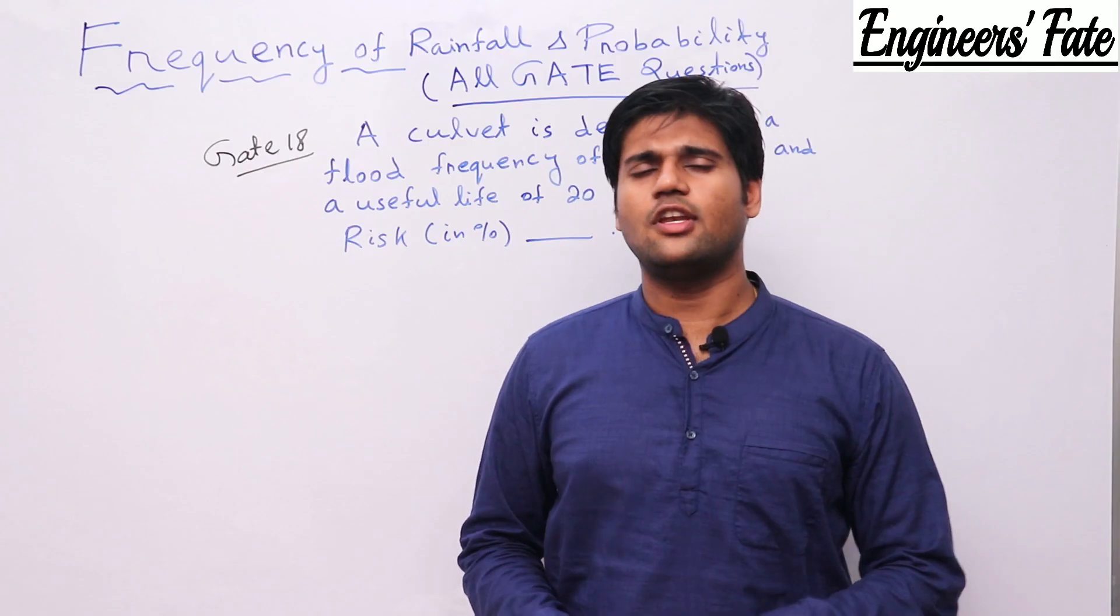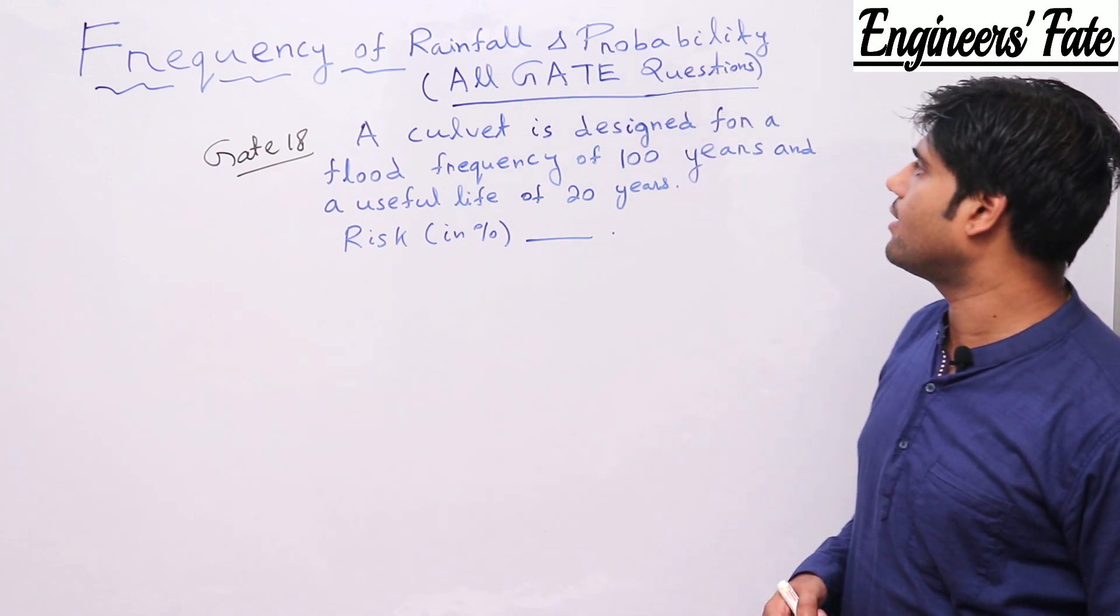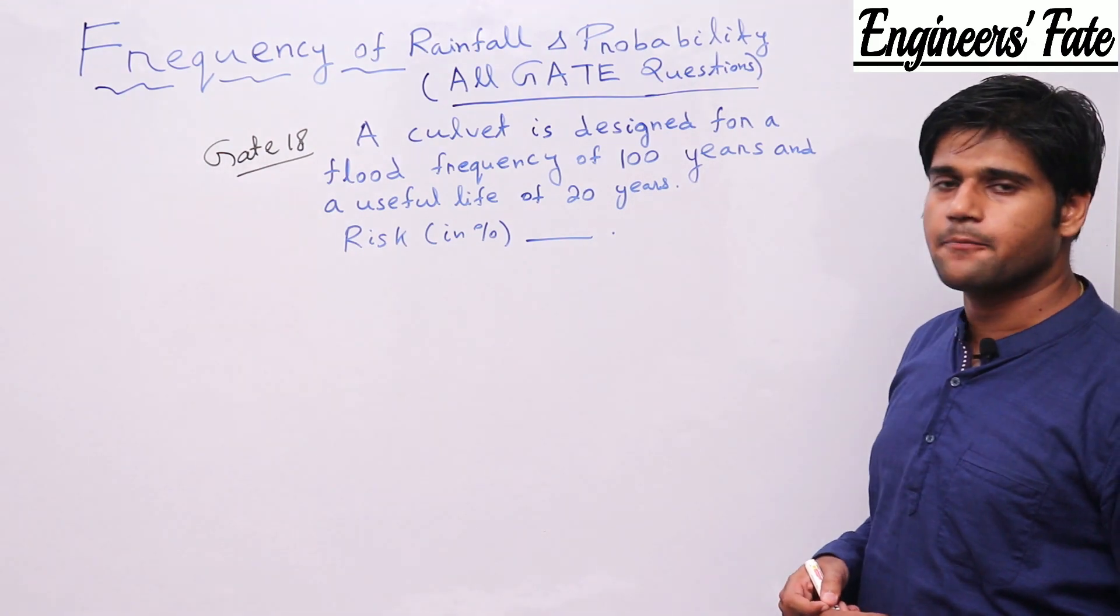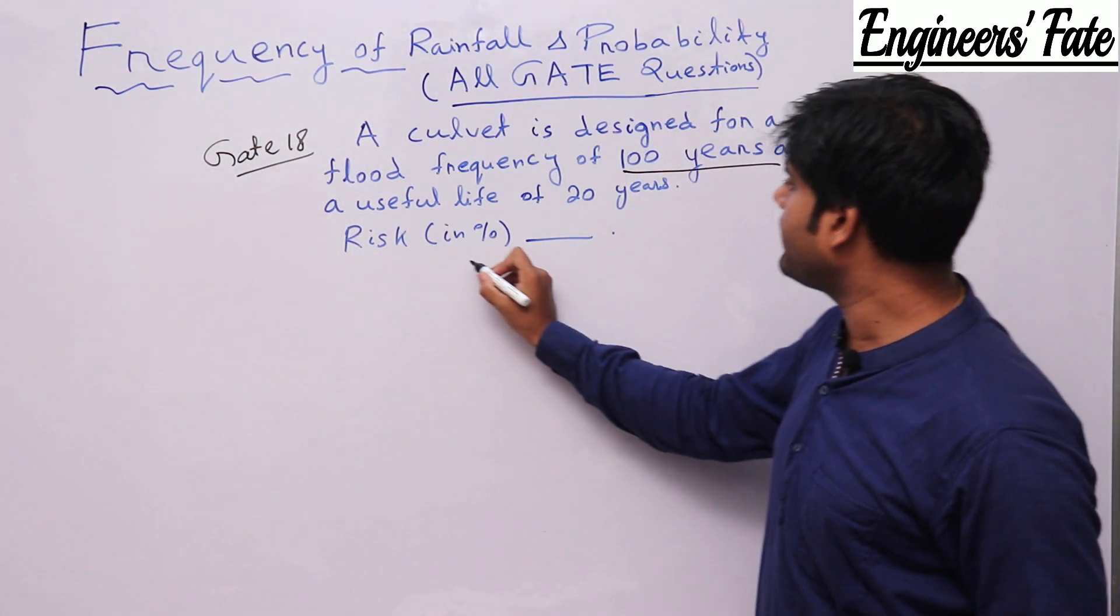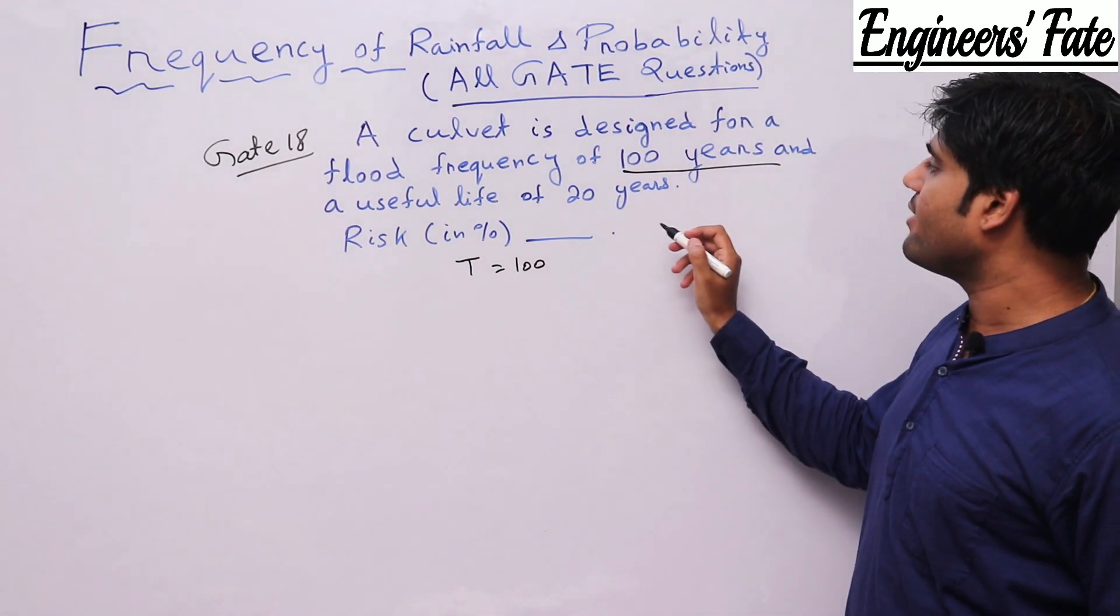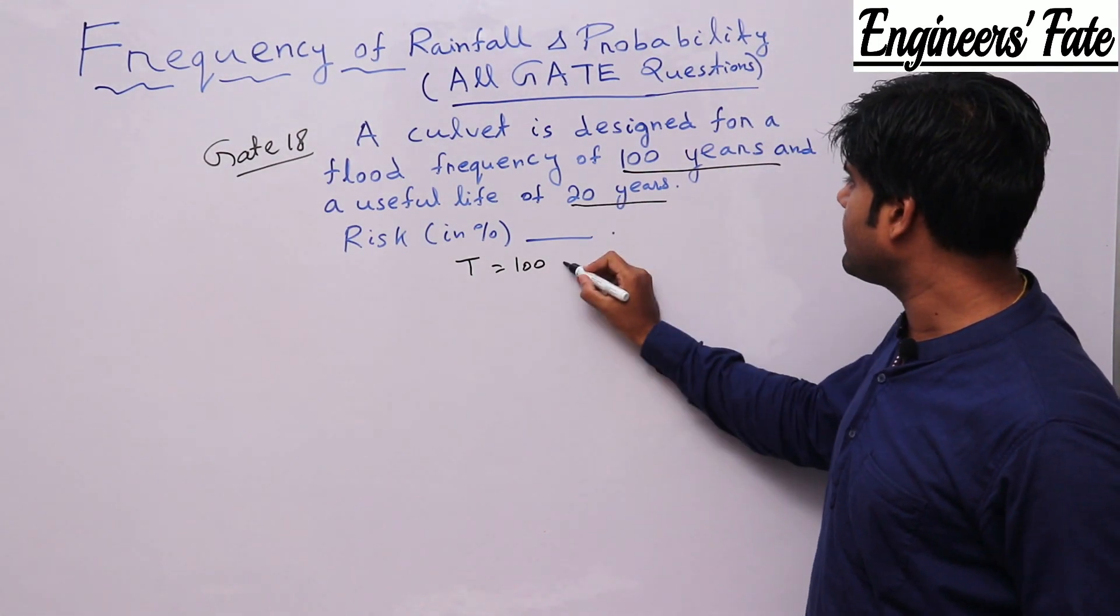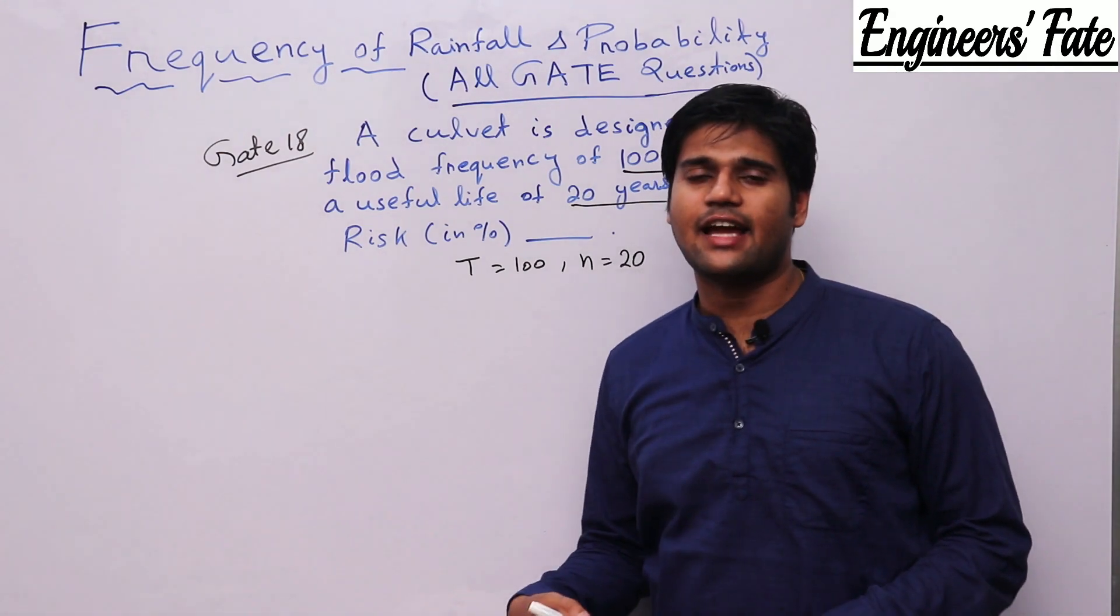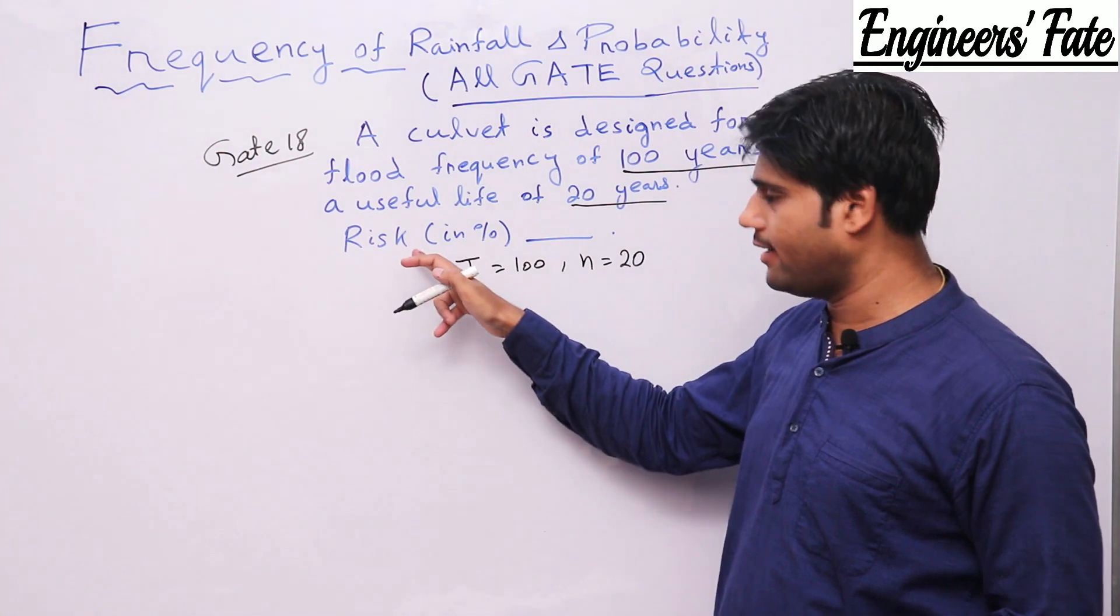So let's discuss this question. A culvert is designed for flood frequency of 100 years means return period T equal to 100 and a useful life of 20 years means N equal to 20. In this question he has directly asked us to find risk.